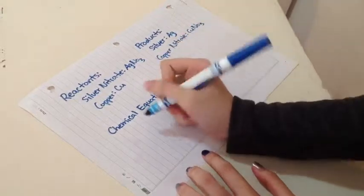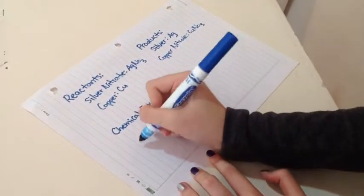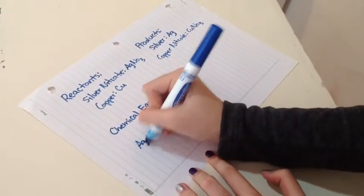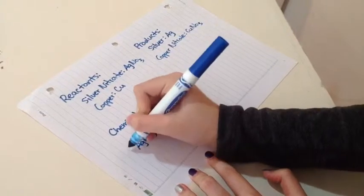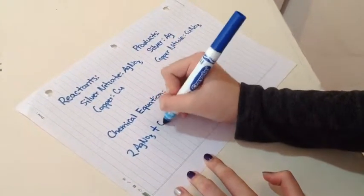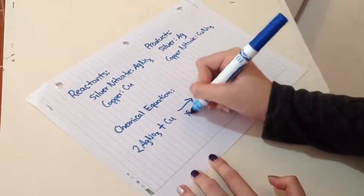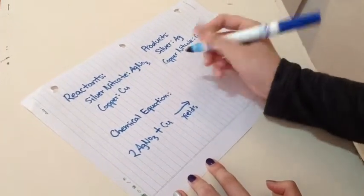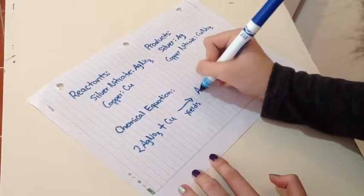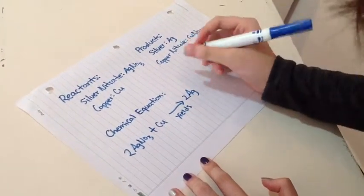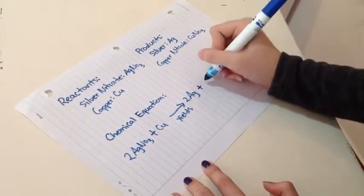So the chemical equation of this experiment is silver nitrate plus copper yields silver, Ag, and copper nitrate.